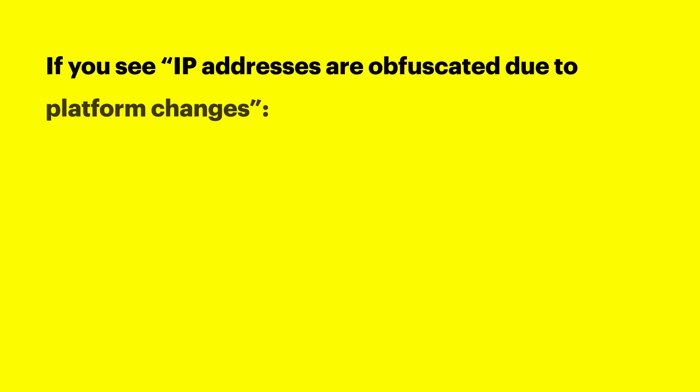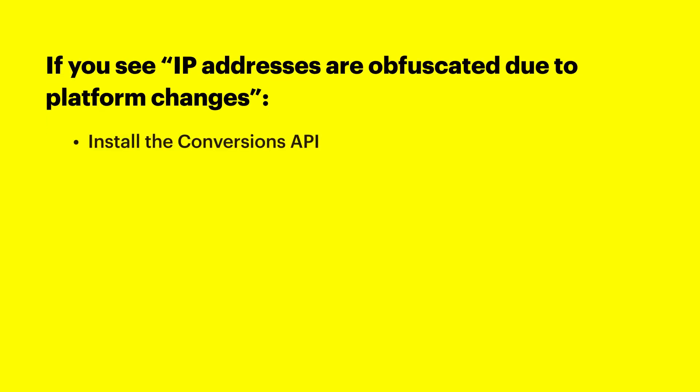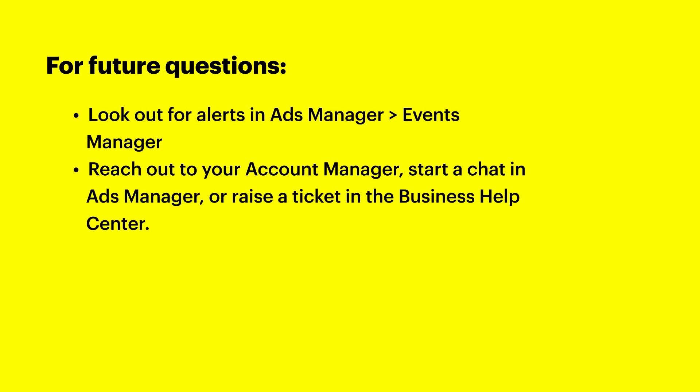Once you've implemented fixes for the identified issues, allow up to 24 hours for your EQS to update in Events Manager. You may also see an issue stating that a large percentage of IP addresses are obfuscated due to platform changes. This means that IP addresses are being masked due to platform changes. We suggest installing the conversions API, if you haven't already, to assist in sending matchable IP addresses. This will ultimately enable us to match events back to more of your users, which will lead to more efficiency and campaign results. Finally, look out for alerts in Events Manager on how you can improve your pixel setup and events. For further questions, reach out to your Account Manager, start a chat in Ads Manager, or raise a ticket in the Business Help Center.